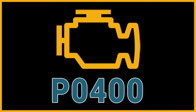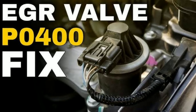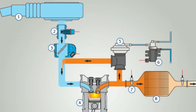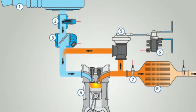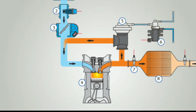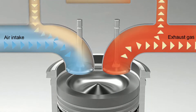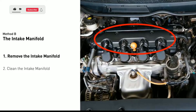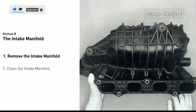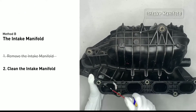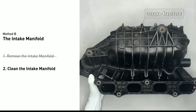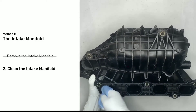Let's go over some additional tips and troubleshooting steps that can help you address the P0400 code effectively. Routine maintenance: regular maintenance can prevent EGR system issues. Follow your manufacturer's recommended maintenance schedule, including cleaning or replacing the EGR valve at specified intervals. Use a high-quality EGR cleaner when cleaning the EGR passages to ensure thorough removal of carbon deposits, and follow the product's instructions carefully.